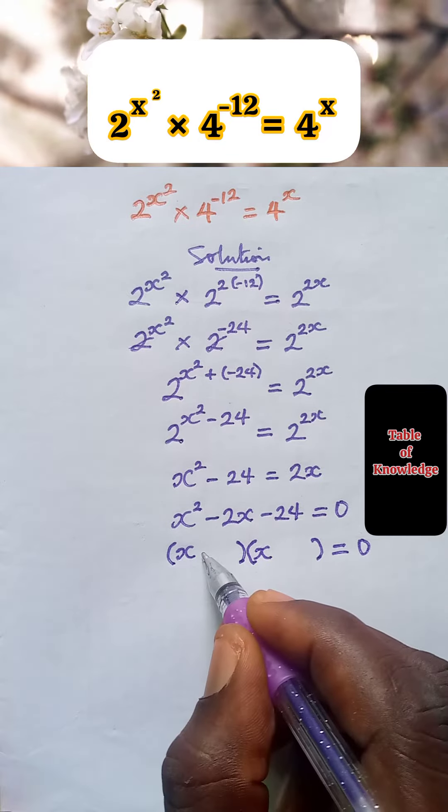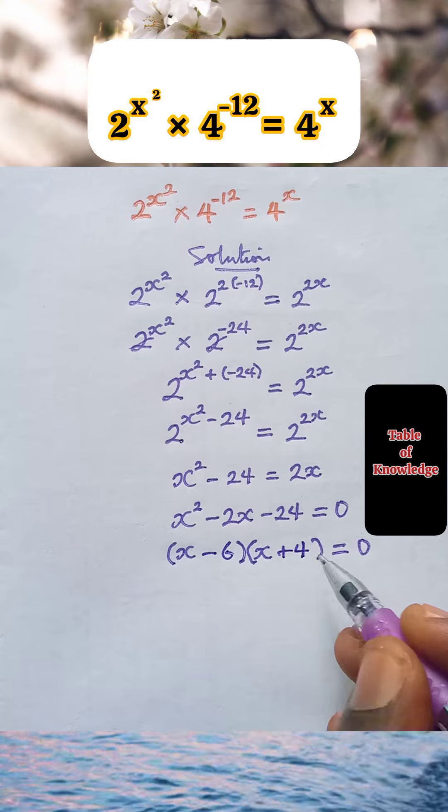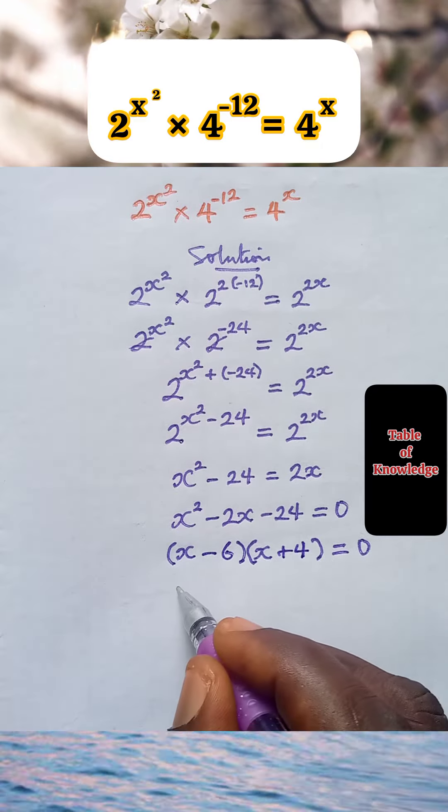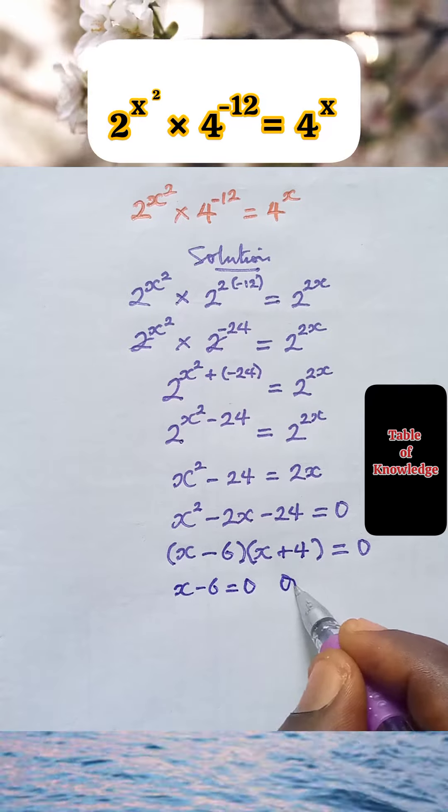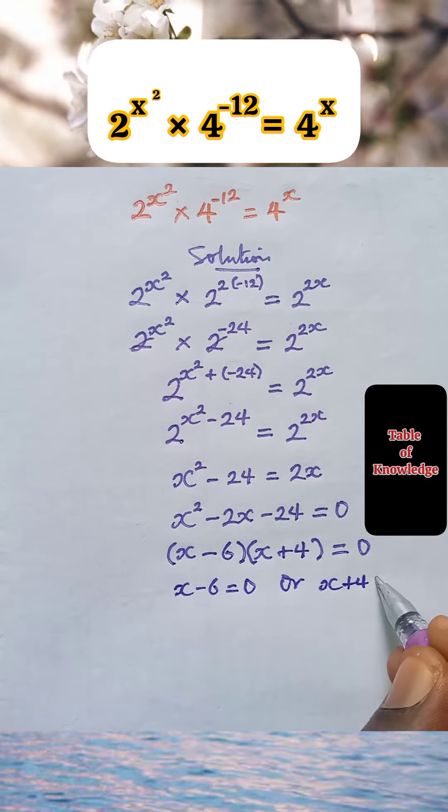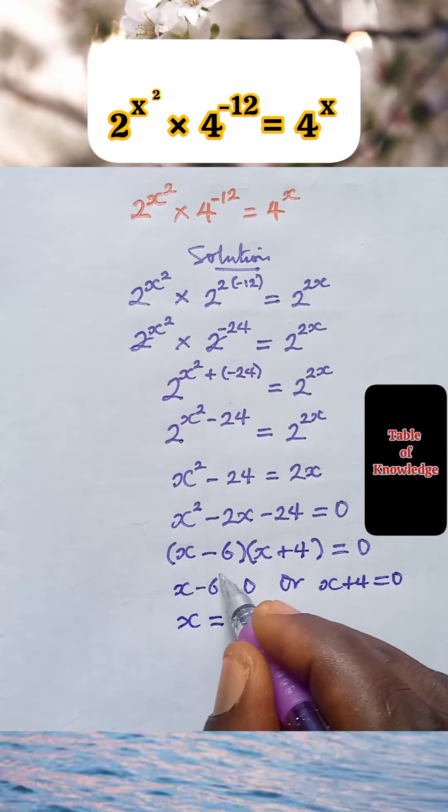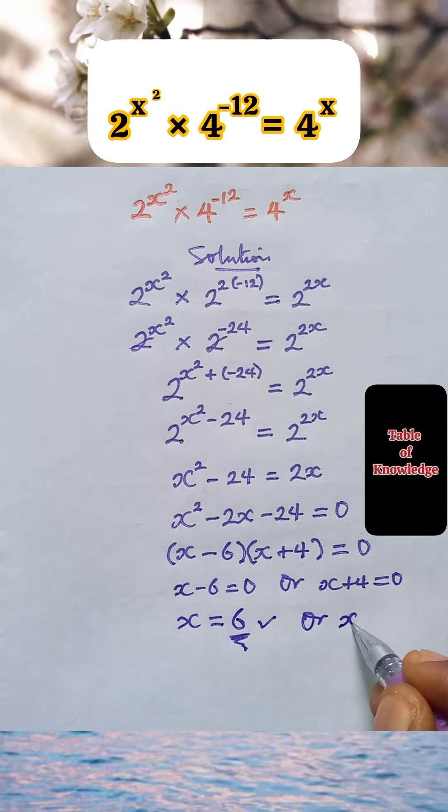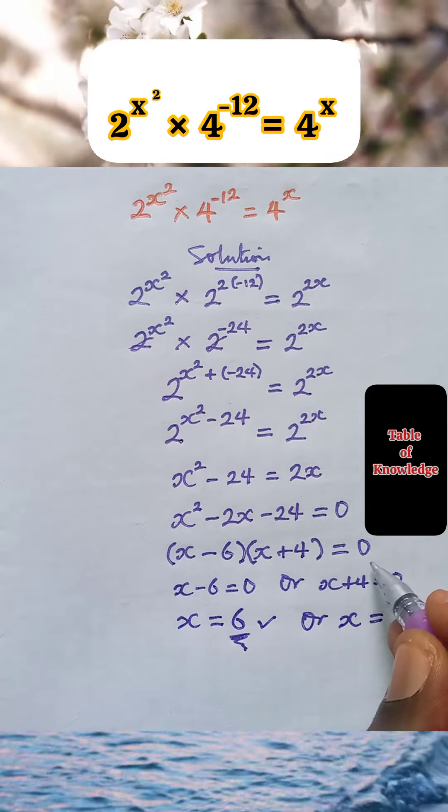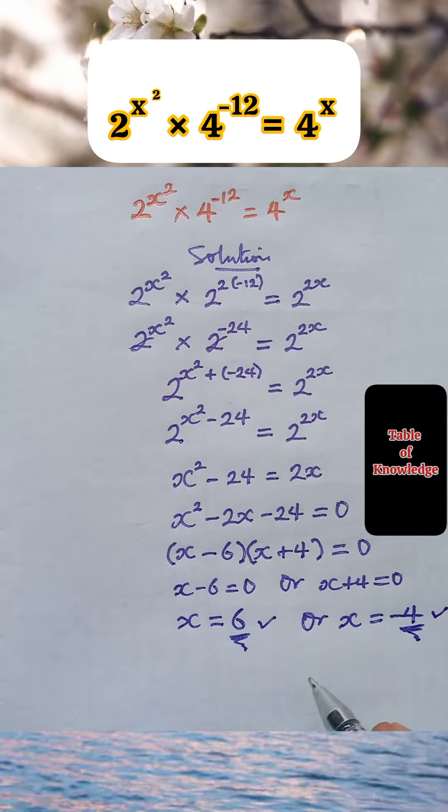And when we add them together, we get 2. The numbers are minus 6 and plus 4. So these are the factors. We take x minus 6 equals to 0, or x plus 4 equals to 0. Here we have x equal to 6, or x equal to minus 4, and these are the answers.